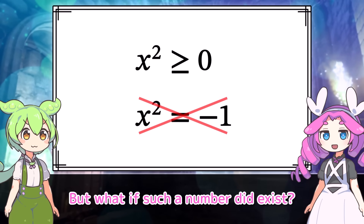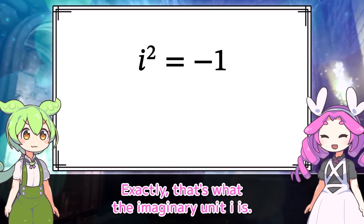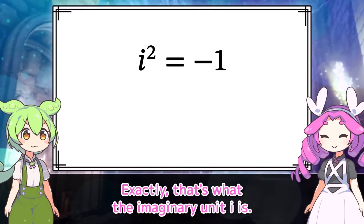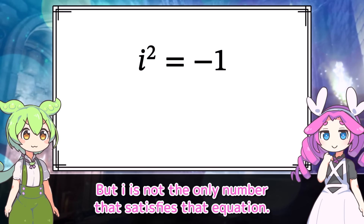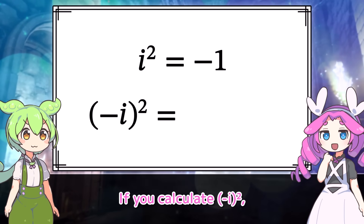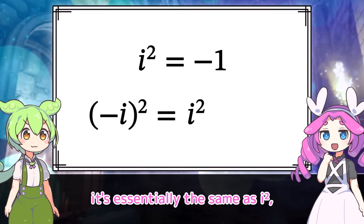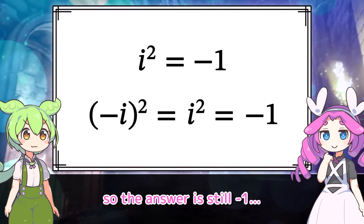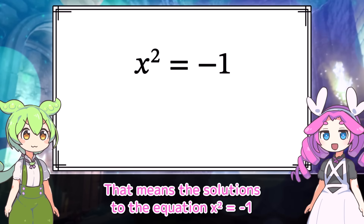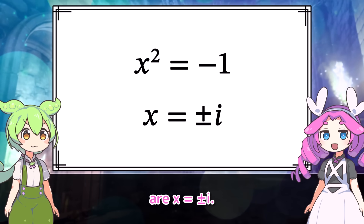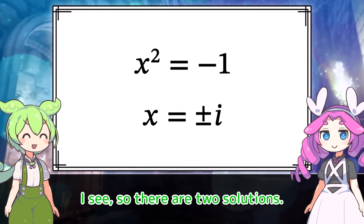But what if such a number did exist? Exactly — that's what the imaginary unit I is. But I is not the only number that satisfies that equation. If you calculate negative I squared, it's essentially the same as I squared, so the answer is still negative one. That means the solutions to the equation x squared equals negative one are x equals plus or minus I. I see — so there are two solutions.